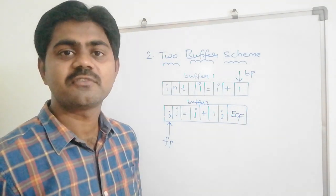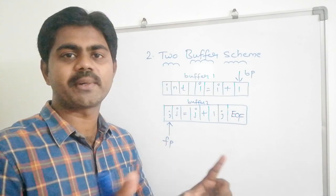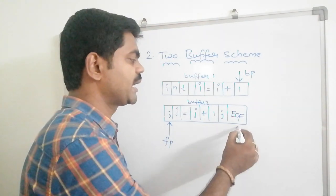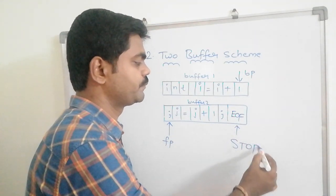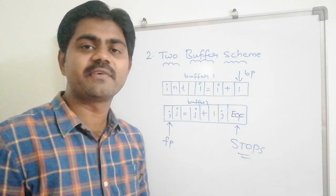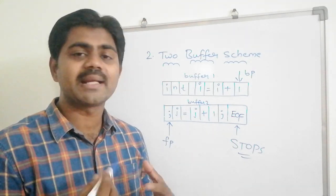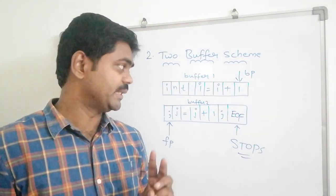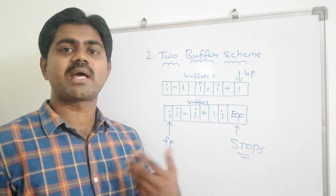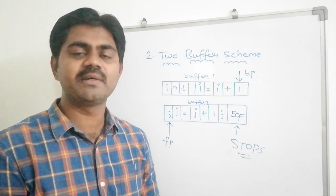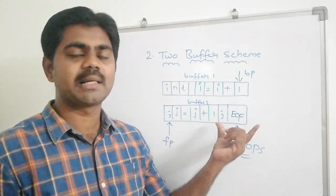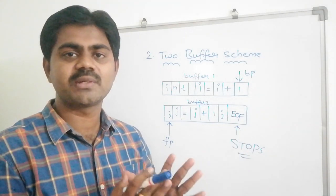With EOF in place, the forward pointer will reach the semicolon, and after that it will reach end of file and stop. Without EOF, two buffer scheme would have limitations, then three buffer scheme, then four buffer scheme — there is no stop. So I place end of file so that my string will stop there.